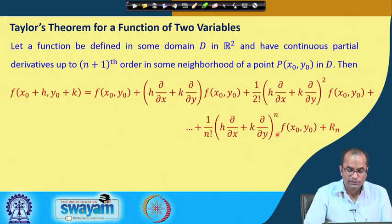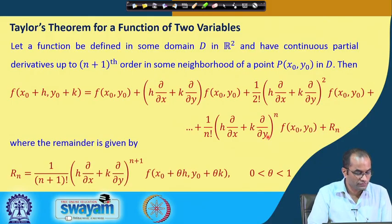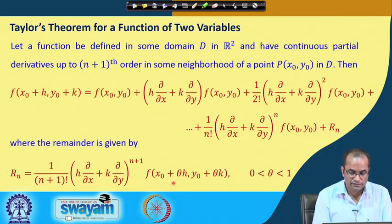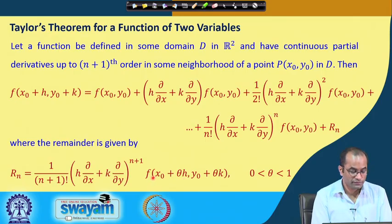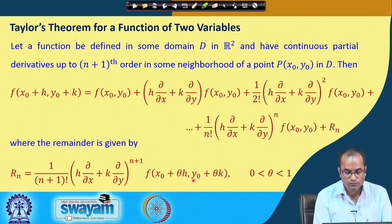This continues up to the nth order term: 1/n! times (h ∂/∂x + k ∂/∂y)^n f evaluated at (x₀, y₀). Then there is the remainder term, where the argument of the (n+1)th derivative is evaluated at (x₀+θh, y₀+θk), where θ is between 0 and 1.